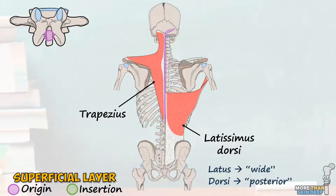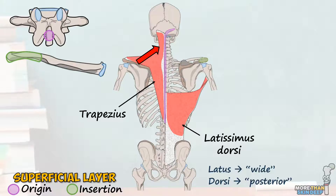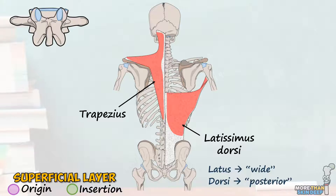Trapezius travels laterally to attach to the acromion of the scapula and rolls over anteriorly to attach to the lateral third of the clavicle. Its function is complex and reflects its unique shape: the superior fibers elevate and upwardly rotate the scapula; the middle fibers draw the scapula backwards; and the inferior fibers depress and also upwardly rotate the scapula. The upper fibers also have a small effect on neck movements. Notably, while the other intermediate and superficial back muscles are innervated by nerves from the anterior rami of the spinal nerves, trapezius is innervated predominantly by the accessory cranial nerve.